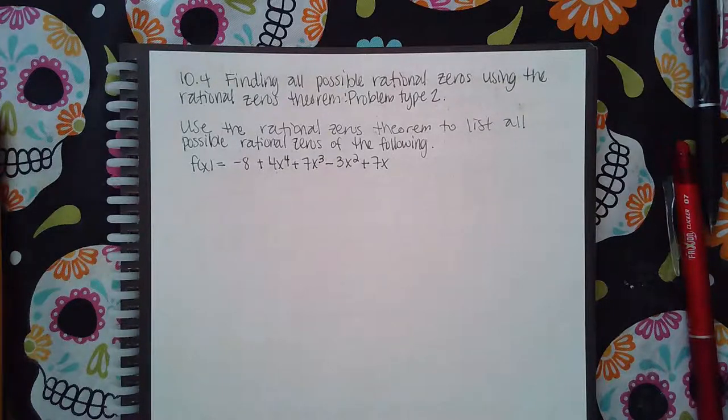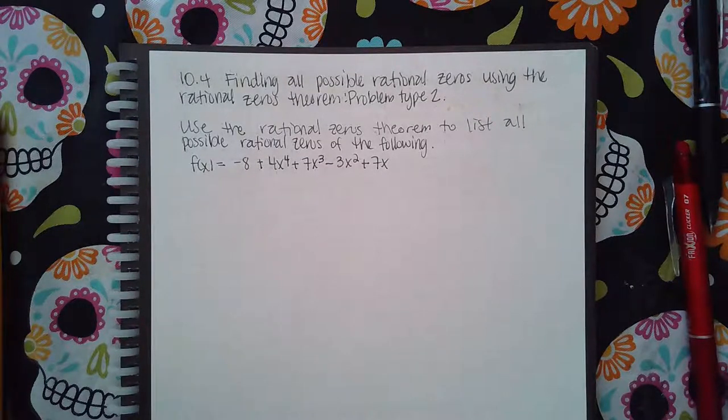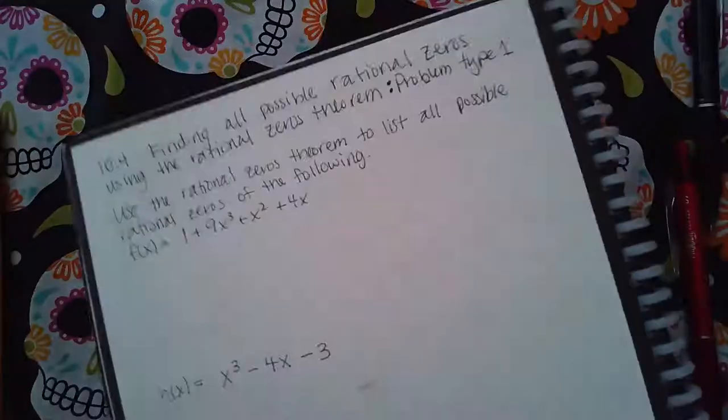Okay, here we have 10.4, finding all possible rational zeros using the rational zeros theorem problem type 1.